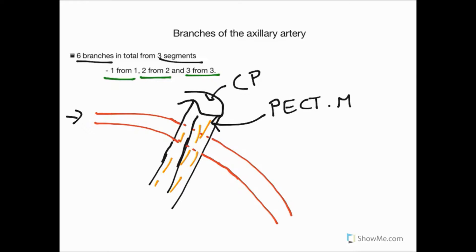The first and only branch from the first segment comes down here and is called the superior thoracic artery. It's a small branch coming from the anterior surface of the axillary artery. That's our only branch from the first segment.